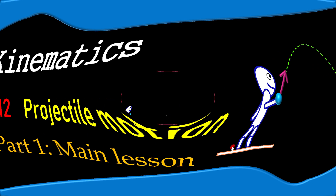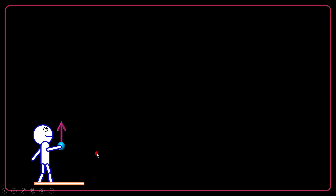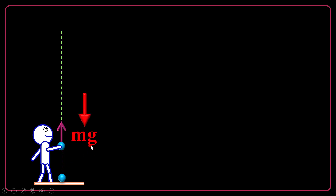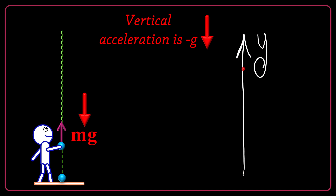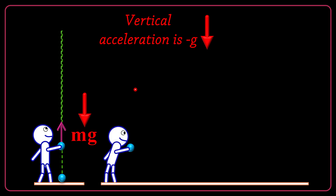If you know the lesson, let's start. Suppose that I threw an object vertically upward. You know that this object will raise up, reach a peak point, and then come down and touch the ground. Normally, it's affected just by the gravitational pull of mg downward as we ignore air resistance for the time being. So it's expected to have just the vertical downward acceleration of negative g.